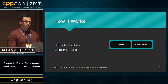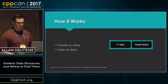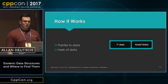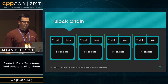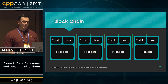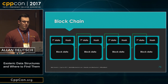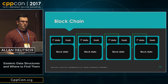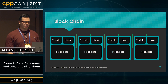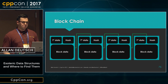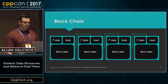The way it works is you'll have the pointer to the data and the hash of the data. For a blockchain — one of the first derivatives — we have the hash pointer as well as some data that makes up that block. Each of these blocks has a hash pointer to the previous block. Using this technique you can make something like a secure log or cryptocurrency which logs the transactions.